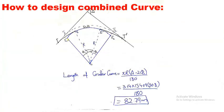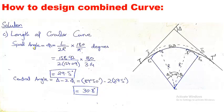The third parameter is the length of the circular curve. The formula is: L_c = πR(Δ − 2φ₁)/180. We first need the spiral angle φ₁, using the formula: φ₁ = (L × 180)/(2πR) in degrees. Substituting L = 158.92 m and R (the radius of the circular path) and dividing by π gives the spiral angle φ₁ = 29.5°.